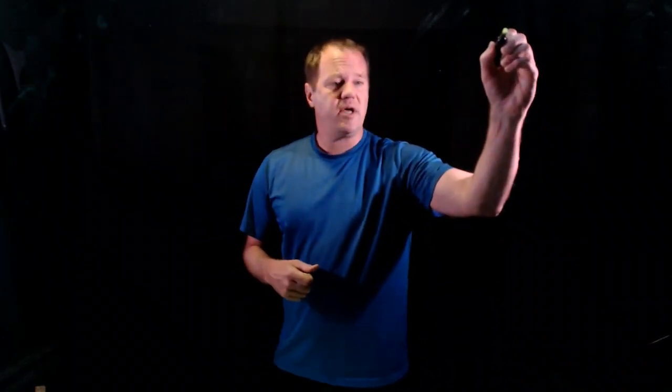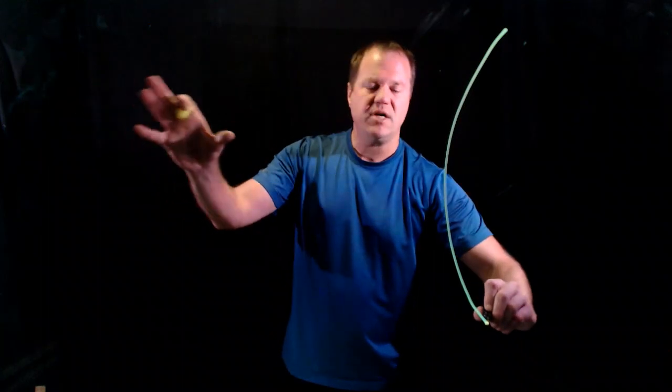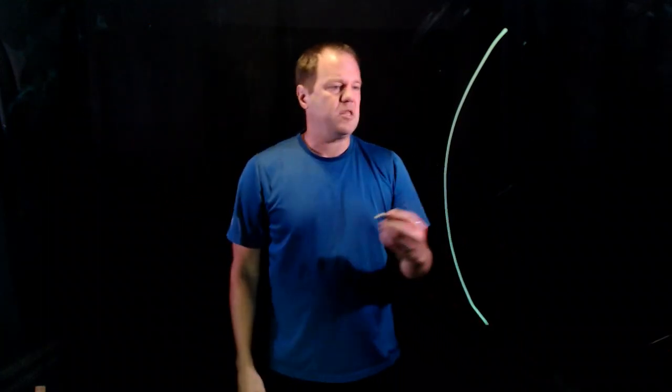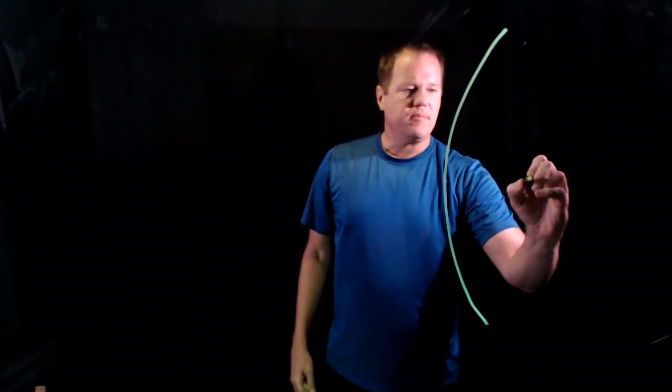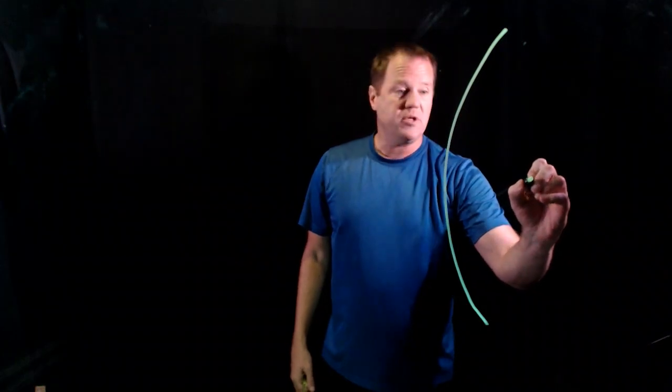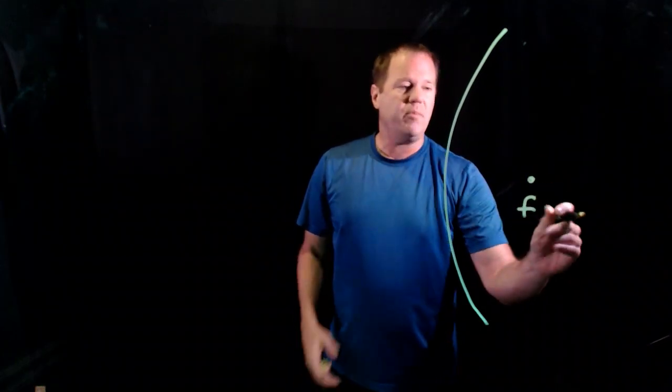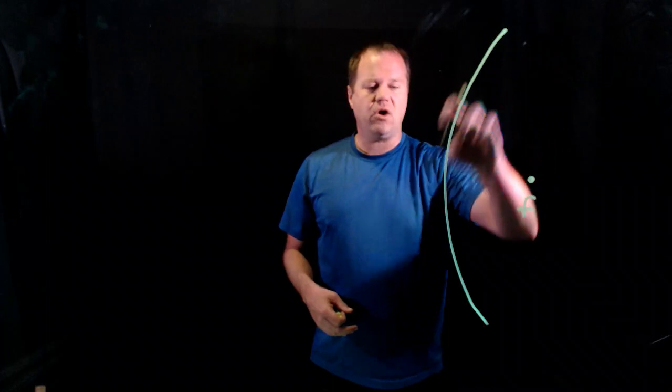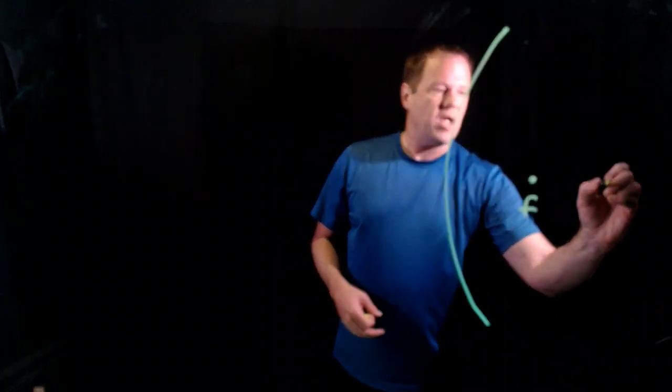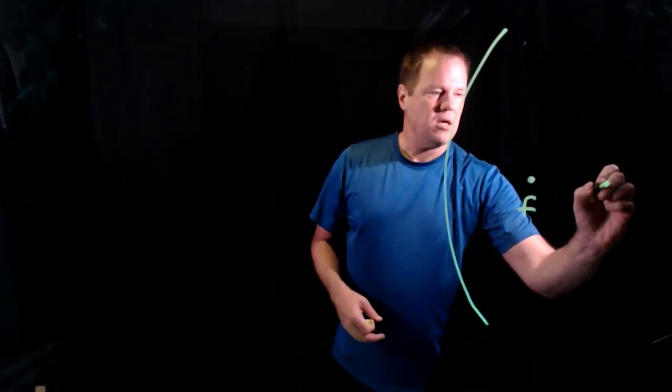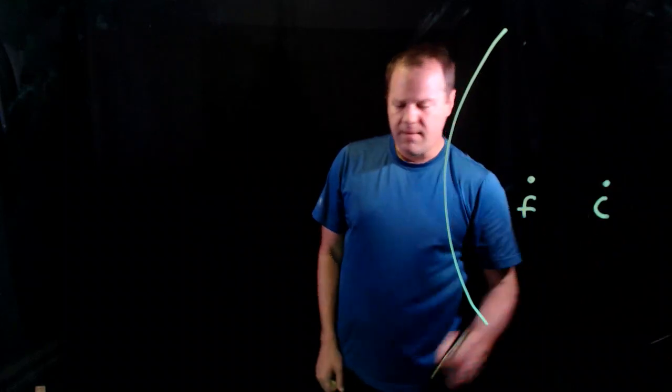A convex mirror looks like this, assuming that the object is over here somewhere. The focal point would be behind the mirror. Here's our focal point. It would be halfway between the center of this circle and the surface of the mirror.